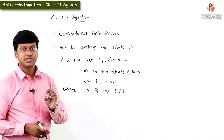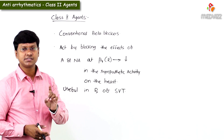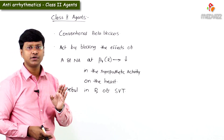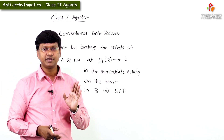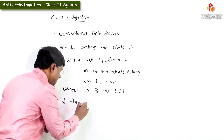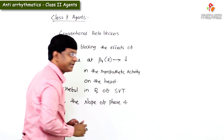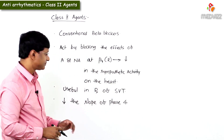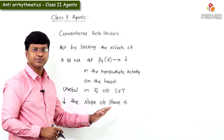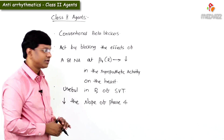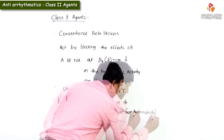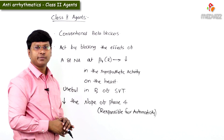Another very important point about Class 2 agents is that these drugs decrease the slope of Phase 4. Phase 4 is your resting membrane potential, and decreasing the slope of Phase 4 is responsible for reducing automaticity.